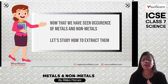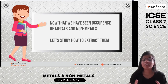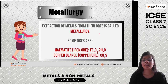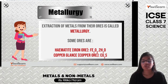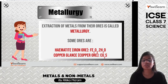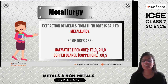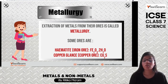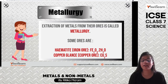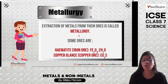We know where metals and nonmetals are found, but how do we extract them? This is metallurgy — the extraction of metals from their ores. For example, hematite is an iron ore (Fe₂O₃·2H₂O), and from it we extract pure iron. Copper glance, or copper ore, is Cu₂S, from which we separate copper. The process of extracting these metals is known as metallurgy.